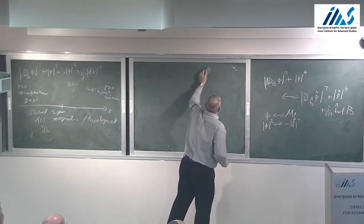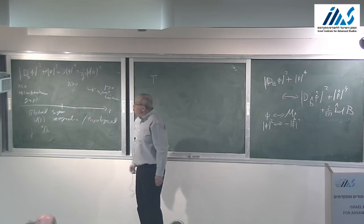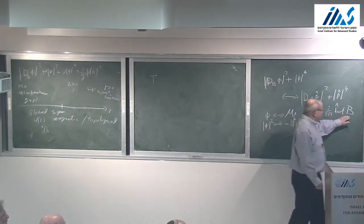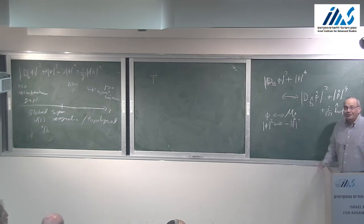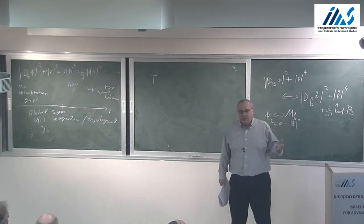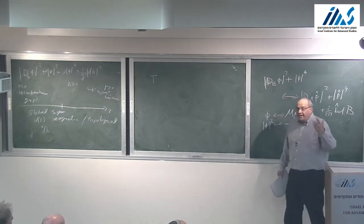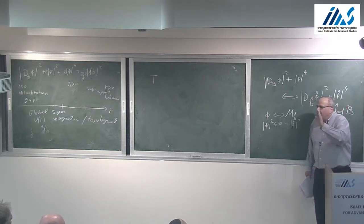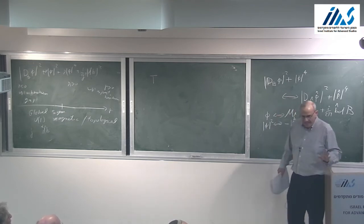Now I map the operators. The operator phi—a complex scalar field charged under U1—is mapped under the duality to the monopole operator of b-hat. This is a map of operators in the IR CFT. We also map phi-squared—the operator multiplying R—and if you look carefully through the analysis, r positive is mapped to r negative. So phi-squared is mapped to minus |phi-hat|^2. The crucial thing is the minus sign here.